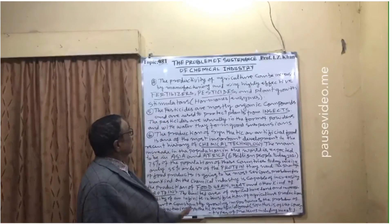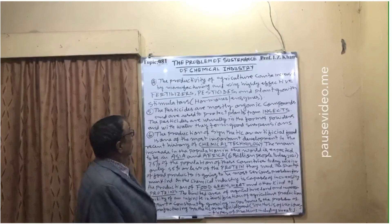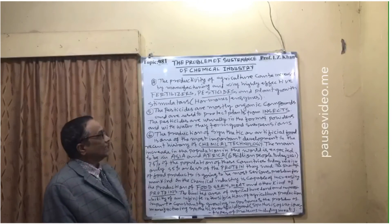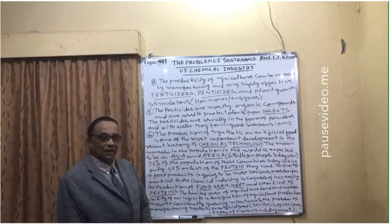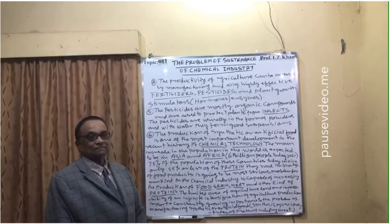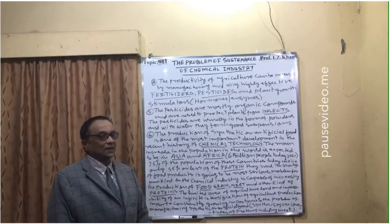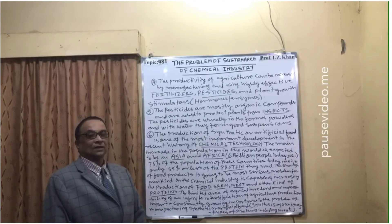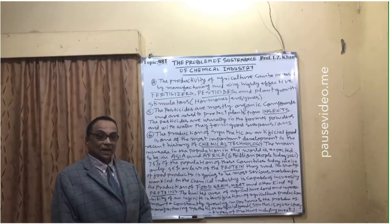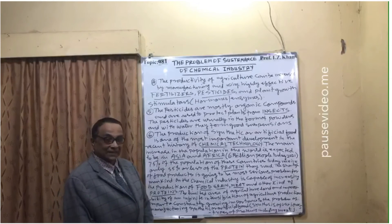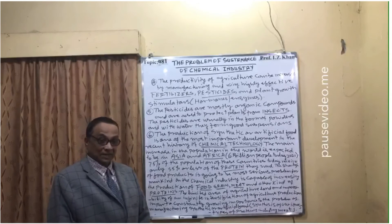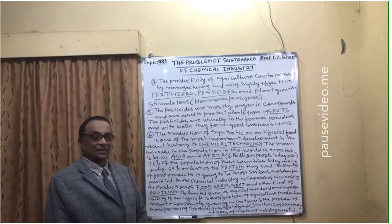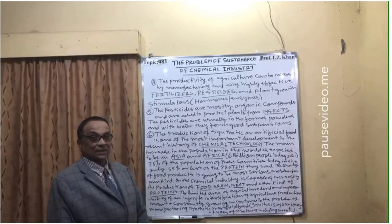Number four: the productivity of agriculture can be increased by manufacturing and using highly effective fertilizers, pesticides, and plant growth stimulators — mainly hormones and enzymes. These are all chemical processes produced by chemical industries. Urea is a very effective fertilizer, providing up to 38 to 40 percent nitrogen for plant growth. Pesticides can take care of insects and pests which are damaging our crops. Genetically modified plant materials and hormones and enzymes are also used for plant growth.